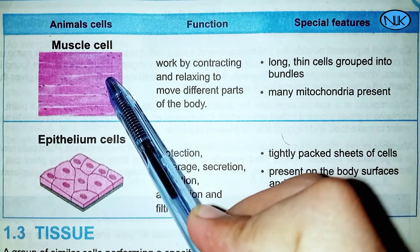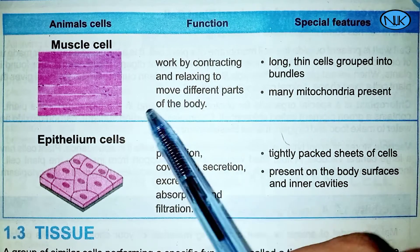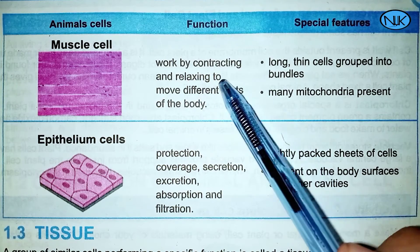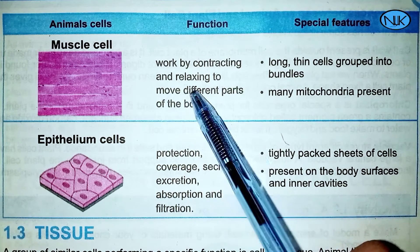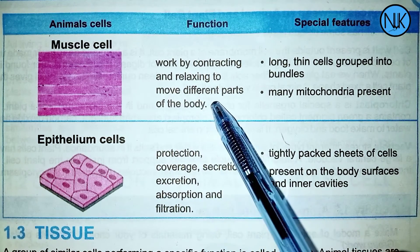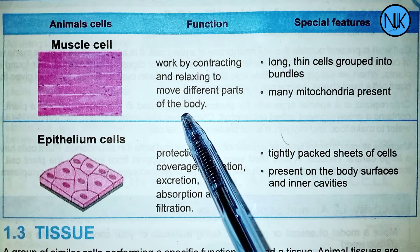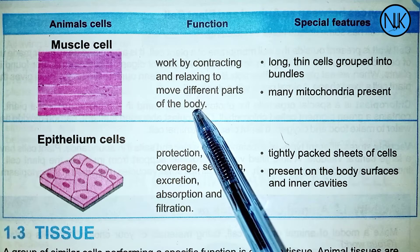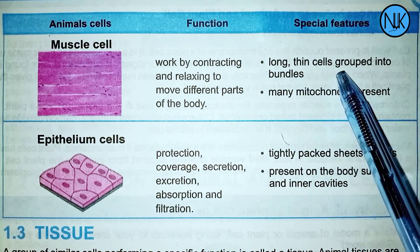Muscle cells work by contracting and relaxing to move different parts of the body. The function of muscle cells is contraction and relaxation, which produces movement in different parts of the body.